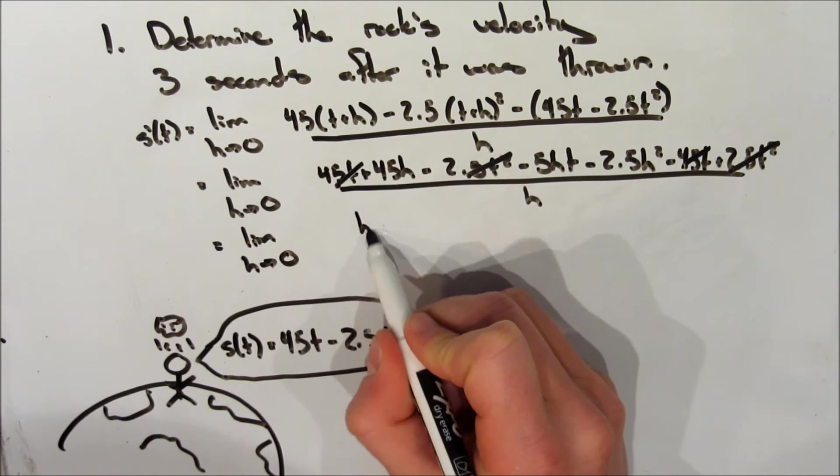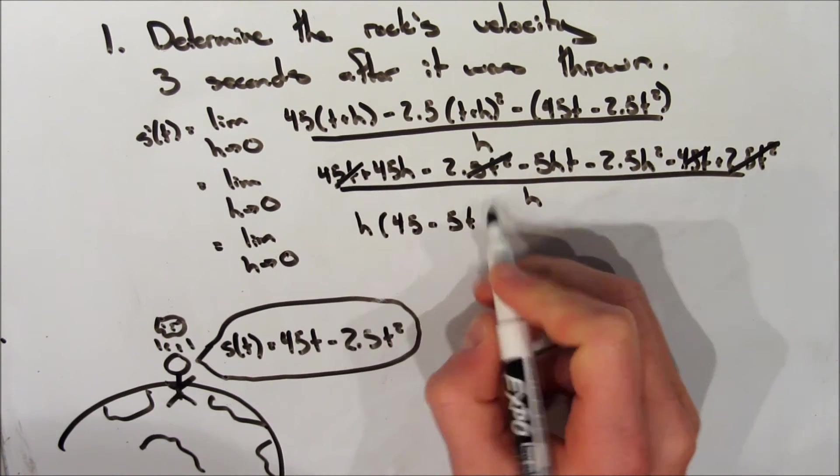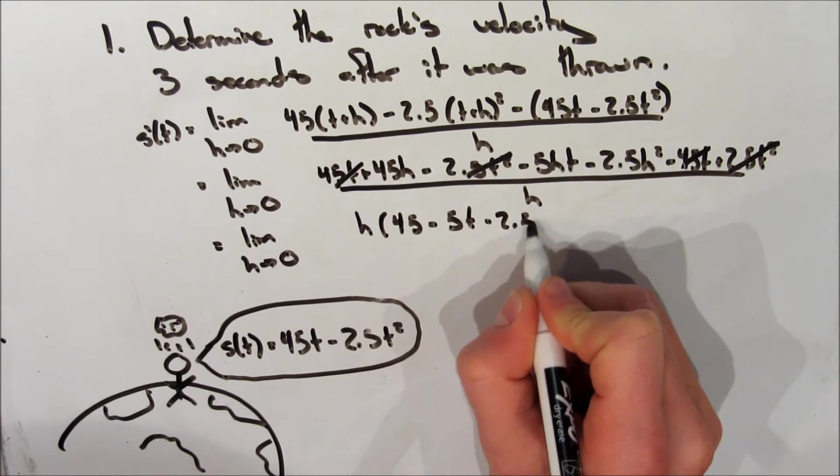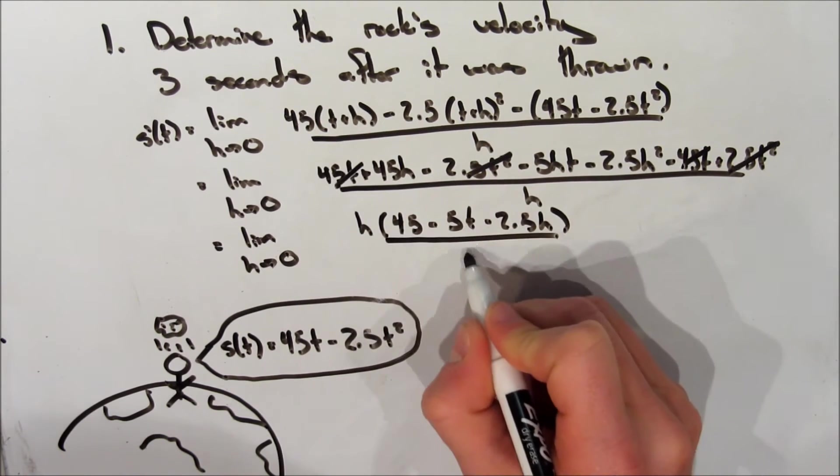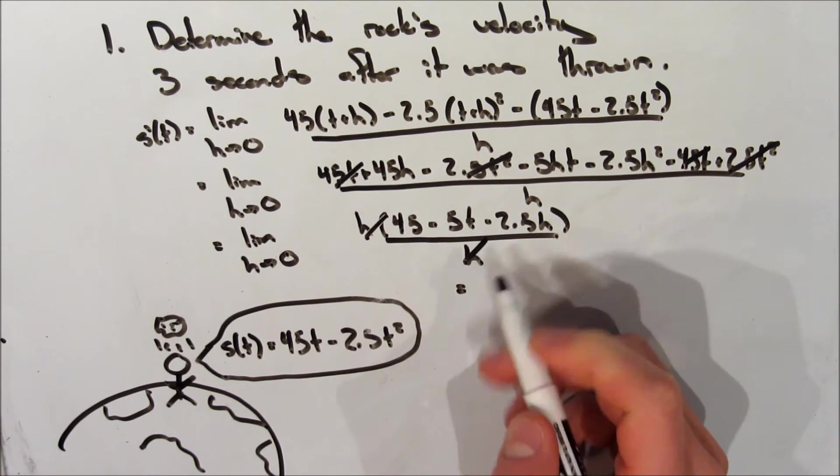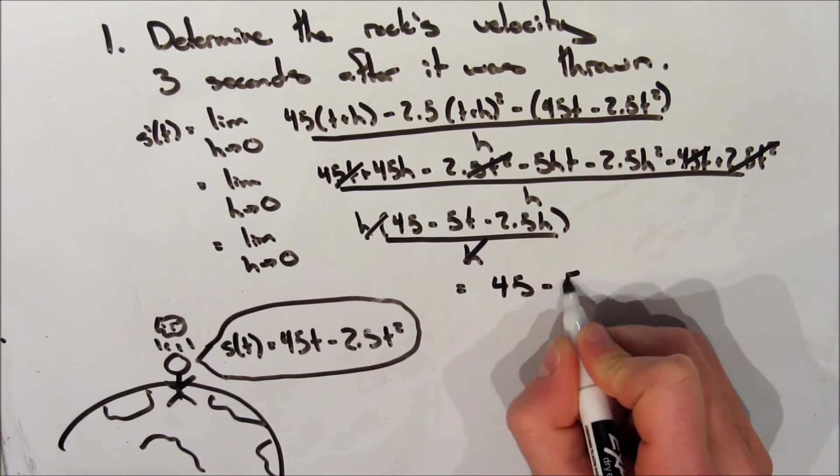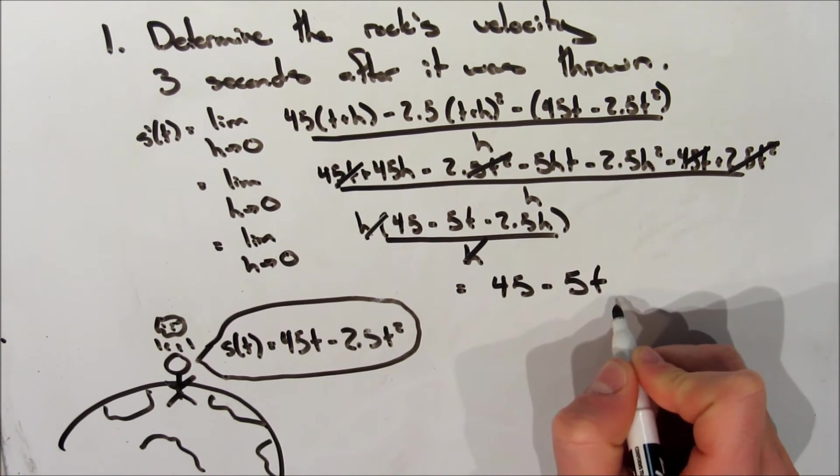And it's still the limit as h approaches zero. We're going to factor out an h on the top, so we're left with h multiplied by 45 minus 5t minus 2.5h over h. So we can cancel out these h's. And now as we take the limit as h approaches zero, we can sub in zero for h.